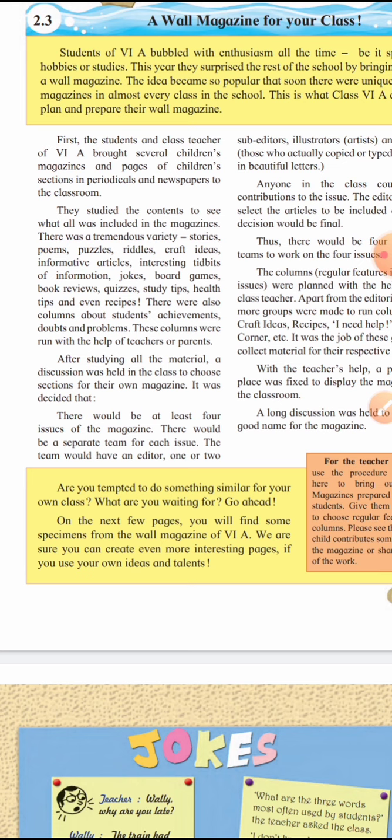There would be a separate team for each issue. For each issue, a separate team is formed and given a specific topic — one group gets studies, another gets sports, another gets recipes, another gets cleanliness. In this way, each group is given a different topic, and based on discussions on that topic, a particular classroom magazine is created.